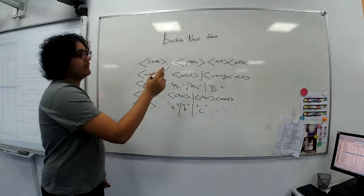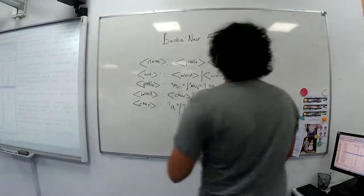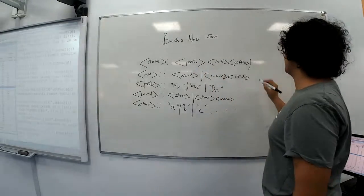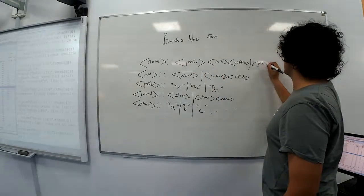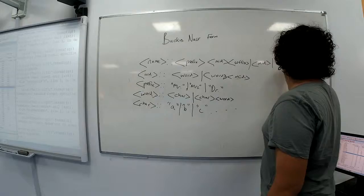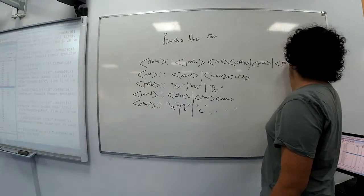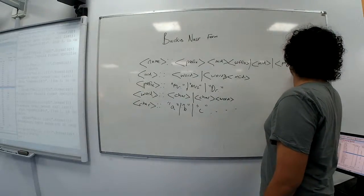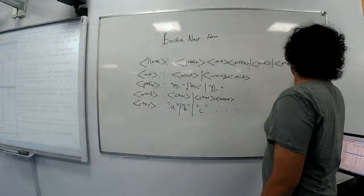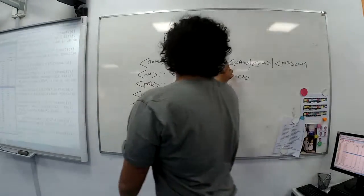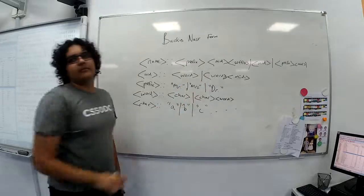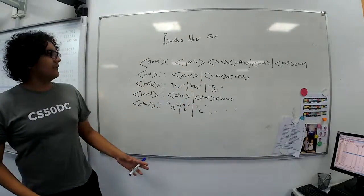And I missed out something actually, because your name doesn't necessarily have to have a prefix and a suffix. So we could just say, or it can just be the mid, or it can just be prefix, and then mid. Or all the other combinations of the only important part being the mid. So now we have a proper definition of a name.